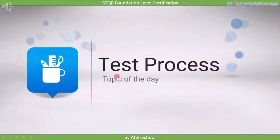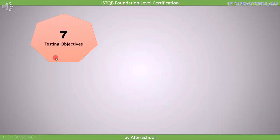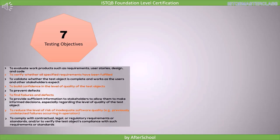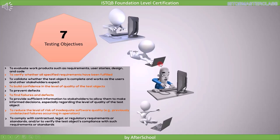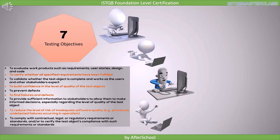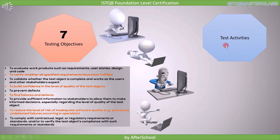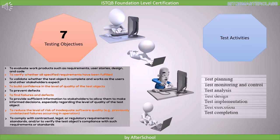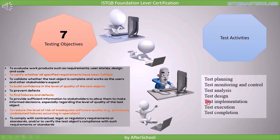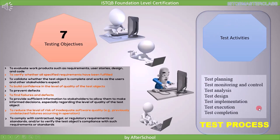In this lecture, we will address the test process. We know there are seven test objectives, and to fulfill these, each person may have different approaches. If everyone applies their own methods in an organization, it is difficult to control and less likely to achieve test objectives. That is why we need a common process that everyone shall follow as a guideline. In this syllabus, seven common test activities are mentioned which can be applied for any product: test planning, test monitoring and control, test analysis, test design, test implementation, test execution, and test completion. Together, these activities are referred to as the test process.